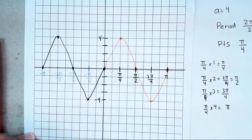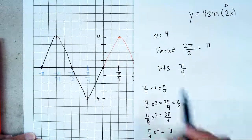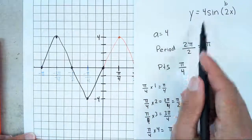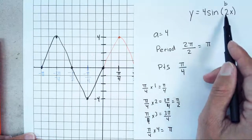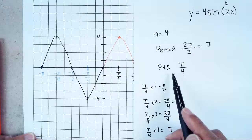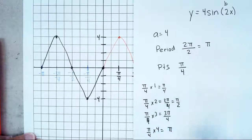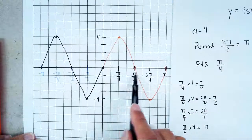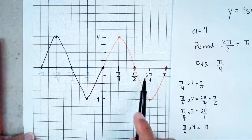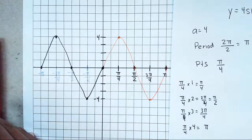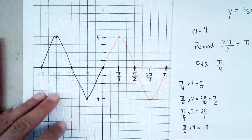Remember, sine looks like an S and starts in the center. To summarize for sine: find your A — the number in front, always positive. Find your period — 2π over your B, where B is the number in front of x (here B = 2, giving period π). Find your points by dividing the period by 4, giving π/4. Multiply by 1, 2, 3, 4 to get each point. If you need two periods, just use the negative sides. Sine pattern: center, up, center, down, center.